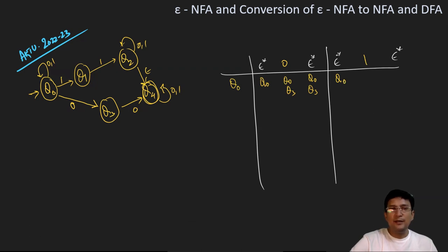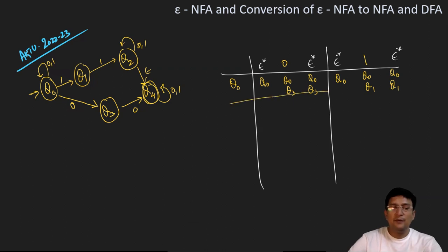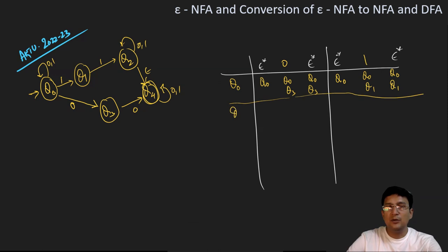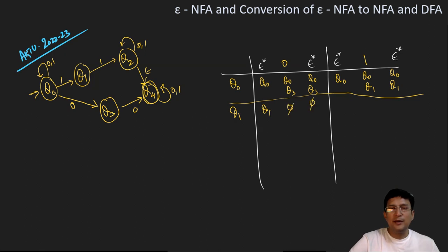So q0 when it gets 1 goes to state q0 and also to state q1. Epsilon closure of q0 is q0, and Epsilon closure of q1 is q1 only because the Epsilon transition is not defined. So Epsilon closure of q1 is q1, and when we transit with 0 it is undefined — so this will be phi, and the Epsilon closure of phi will be phi. When we transit with 1 from q1, it leads us to state q2.